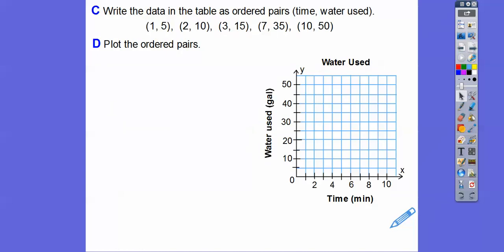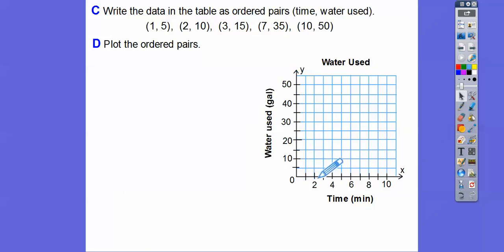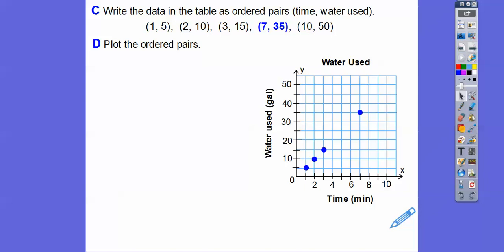Next we're going to plot these pairs. I'll plot 1,5 first — I'll highlight it in blue. I'll go over 1. Now just look at the scales: the x-axis goes by 1, 2, 3, 4 and the y-axis goes by 5, 10, 15, 20. So we'll go over 1, up 5 to plot 1,5. Then over 2, up 10. Over 3, up 15. Over 7, up to 35 — here's 7, right there. And then over 10, up 50.